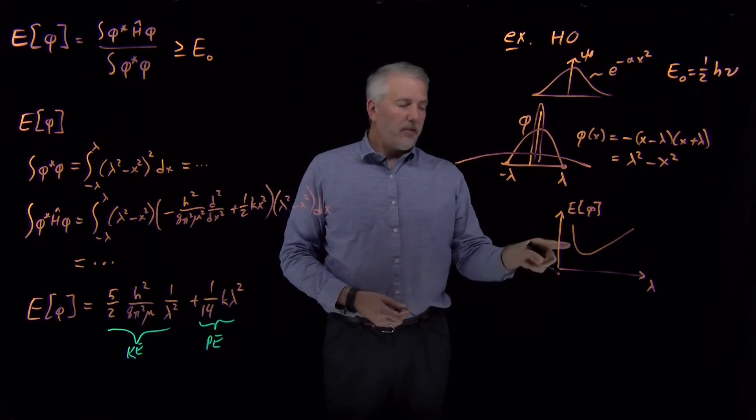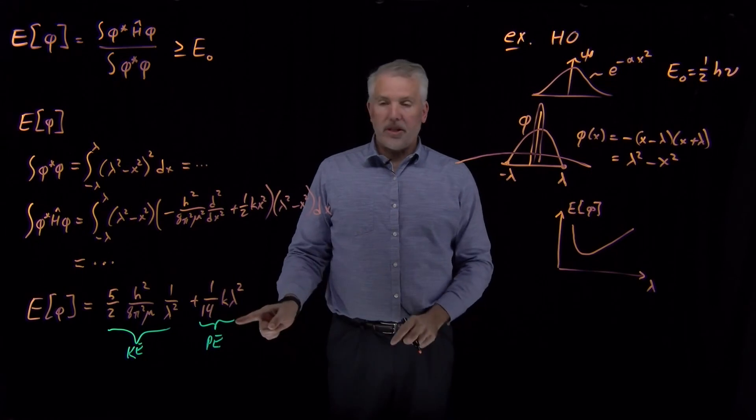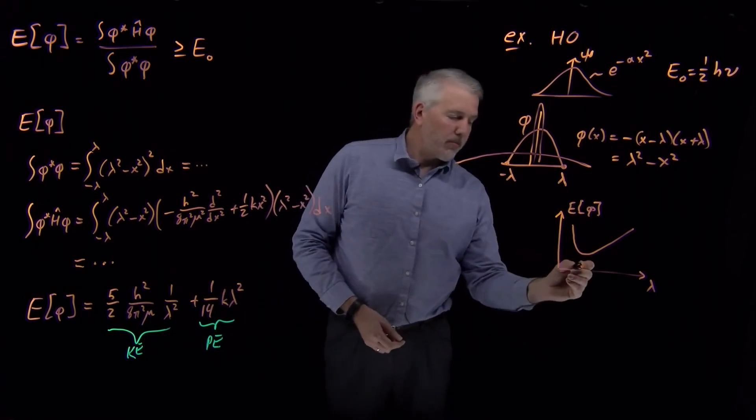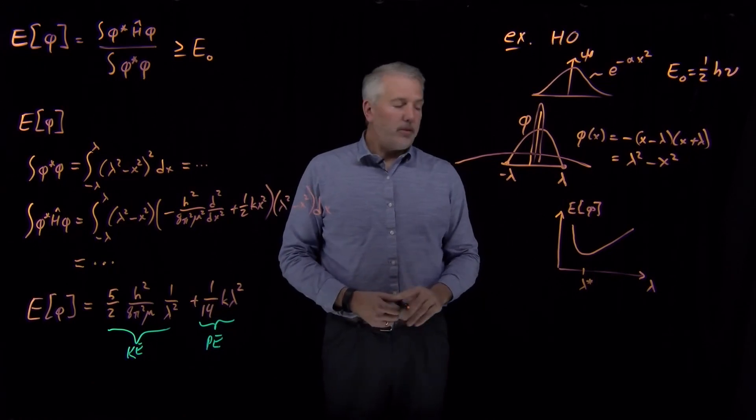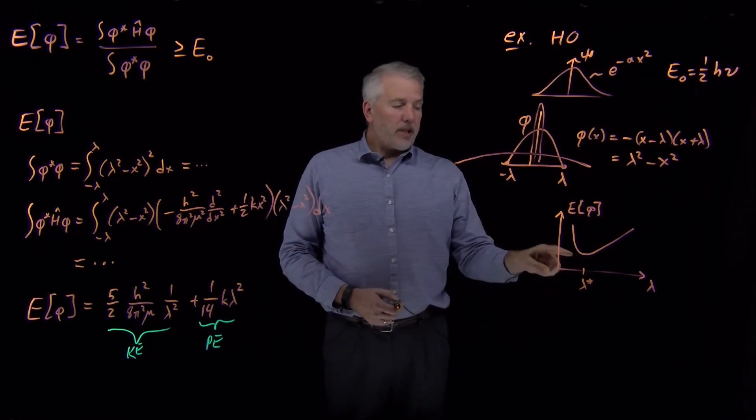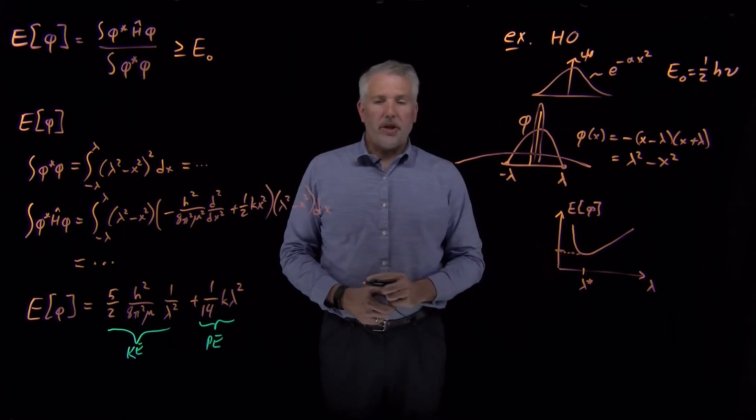I can either, very small lambda, this term blows up, very large lambda, the potential energy term blows up. There's going to be some value in the middle that's the ideal value, the optimal value of lambda that gives us the lowest possible variational energy.